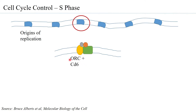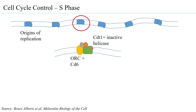To this origin of replication come and bind two complexes. One is the Origin Replication Complex (ORC), made up of six subunits, attached to another molecule called CDC6. The ORC can recognize the origin and bind to it. The next complex that binds is CDT1.